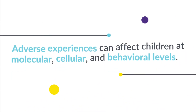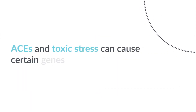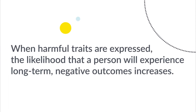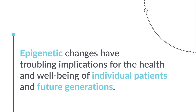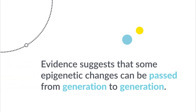Let's connect the dots. Adverse experiences can affect children at molecular, cellular, and behavioral levels. ACEs and toxic stress can cause certain genes to switch on, enabling potentially harmful traits to be expressed. When harmful traits are expressed, the likelihood that a person will experience long-term negative outcomes increases. These epigenetic changes have troubling implications for the health and well-being of individual patients and future generations, as evidence suggests that some epigenetic changes can be passed from generation to generation.